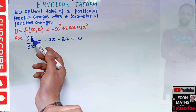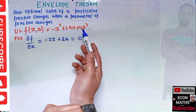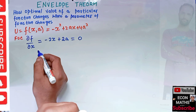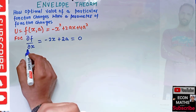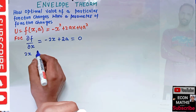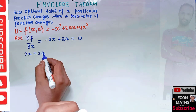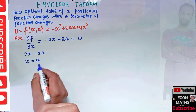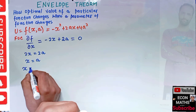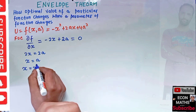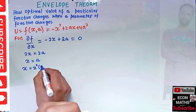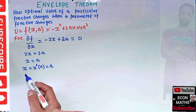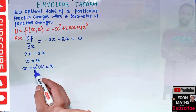Solving the first order condition for x gives us 2x equals 2a, so x equals a. We can write this as x equals x-star(a), which equals a. This means our critical point is a function of the parameter a.